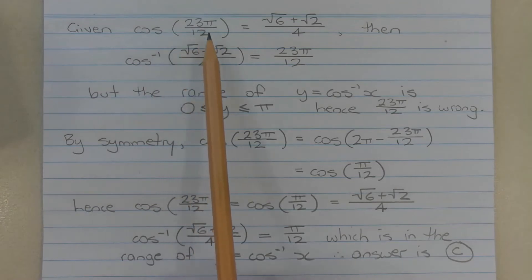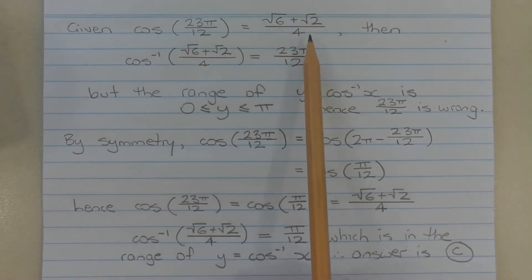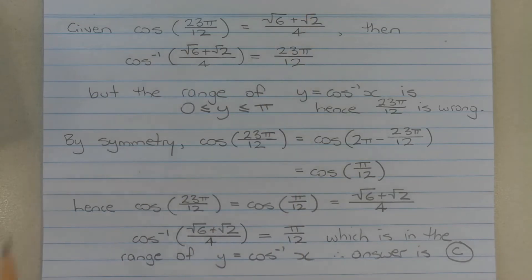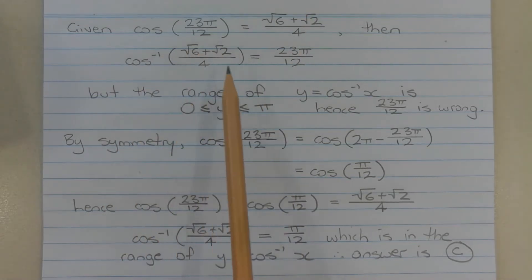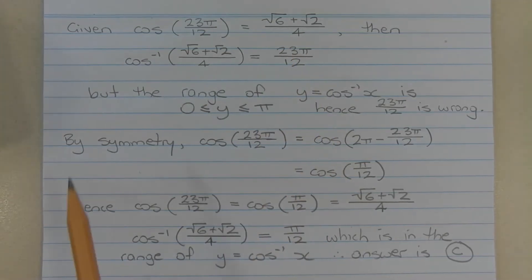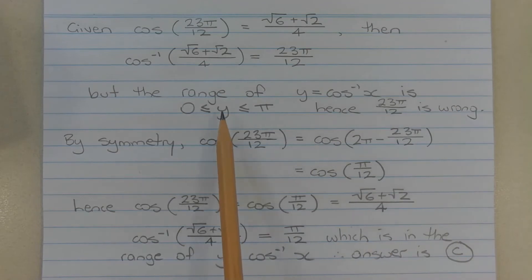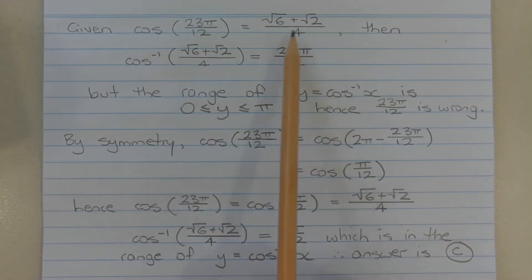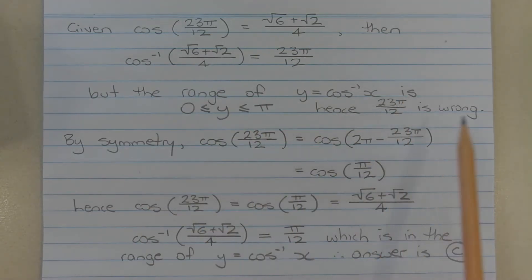Given that cos of 23π over 12 is equal to (√6 + √2) over 4, taking the inverse cos of both sides, we have inverse cos of (√6 + √2) over 4 is equal to 23π over 12. But the range of the inverse function y equals inverse cos of x is y greater than or equal to 0 and less than or equal to π. And 23π over 12 is certainly outside of this range. Hence, 23π over 12 is wrong.